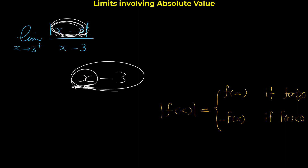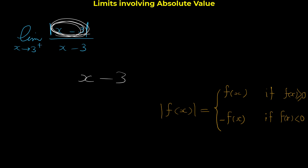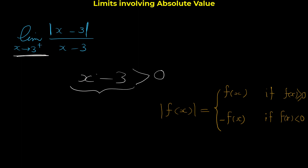Since x approaches 3 from the right, x is a number close to 3 but greater than 3 — you can think of it as 3.1 or 3.01. If x is greater than 3 and we subtract 3, the result is positive. For example, 3.1 - 3 = 0.1, which is positive. So the expression inside the absolute value, x-3, is positive.